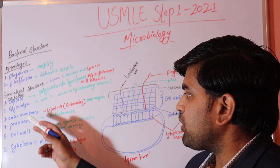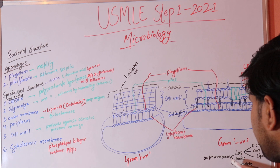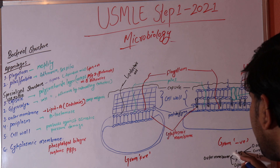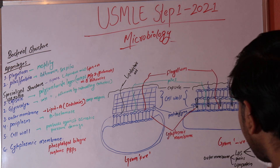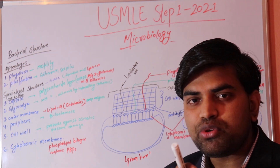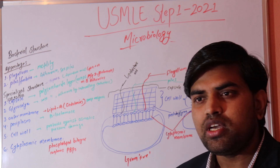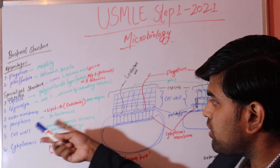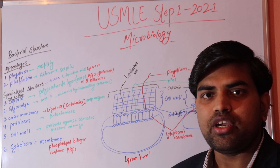The outer membrane has three main components: lipopolysaccharide, porins, and lipoprotein. Porins function in transport across the cell membrane. LPS contains the O antigen (somatic antigen), which is responsible for the antigenicity of the bacteria. The core and lipid A components — lipid A being the most important — are responsible for endotoxic shock by inducing IL-6 and TNF-alpha. This is exclusive to gram negative bacteria.